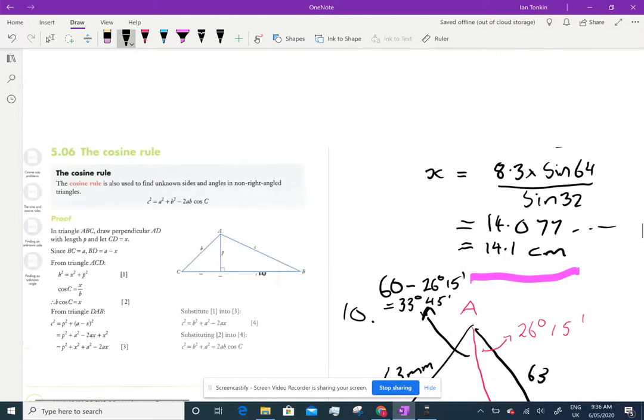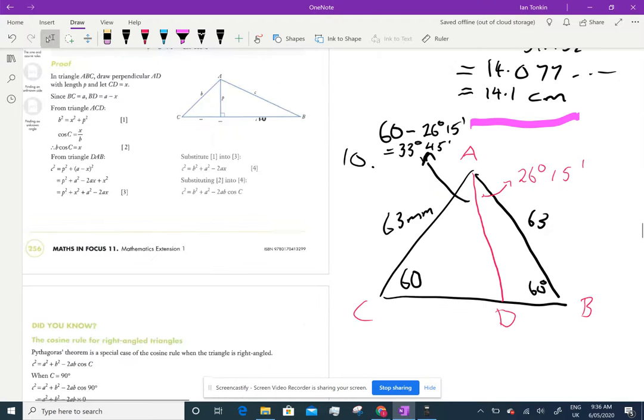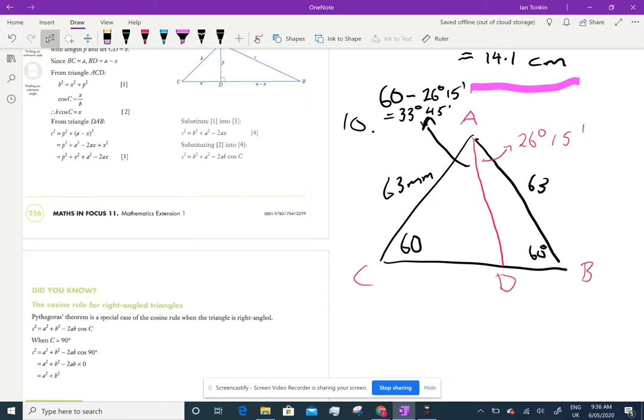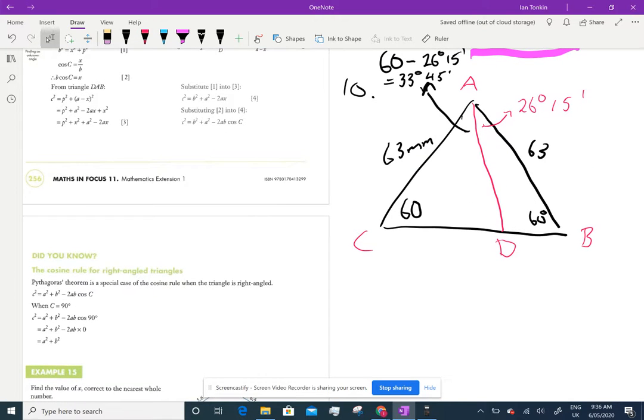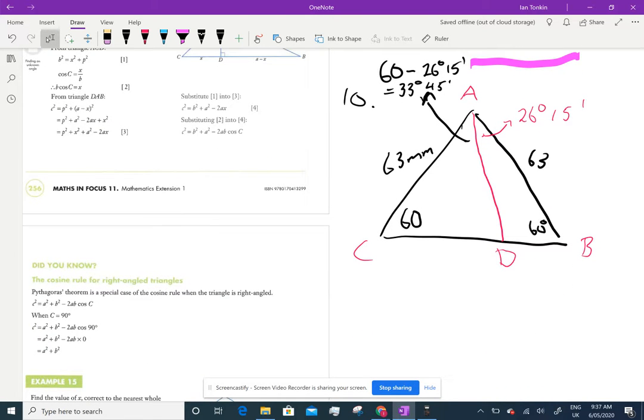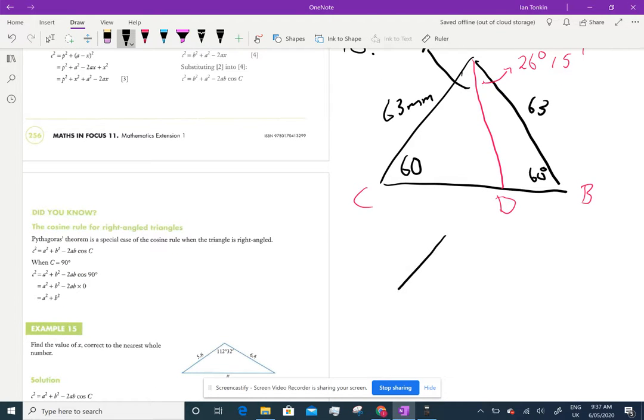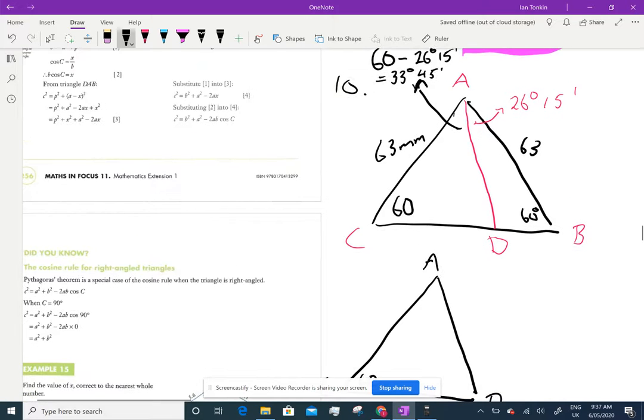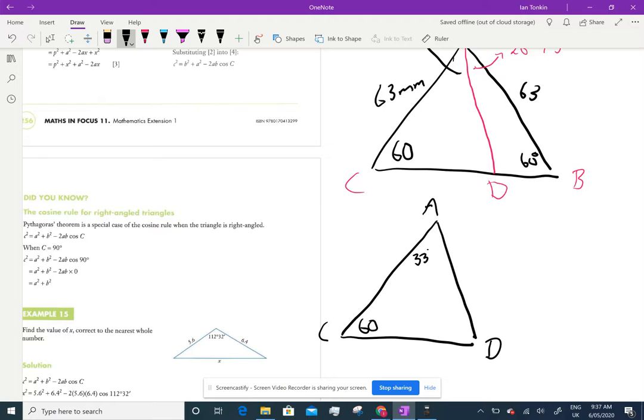I'd suggest drawing these two triangles separately. I have to find AD and DC. I think I'm going to use the left-hand triangle. So that's A, that's C, that's D. I know that's 60 degrees, and I now know that's 33 degrees and 45 minutes. I can work out this angle, and I know this is 63.